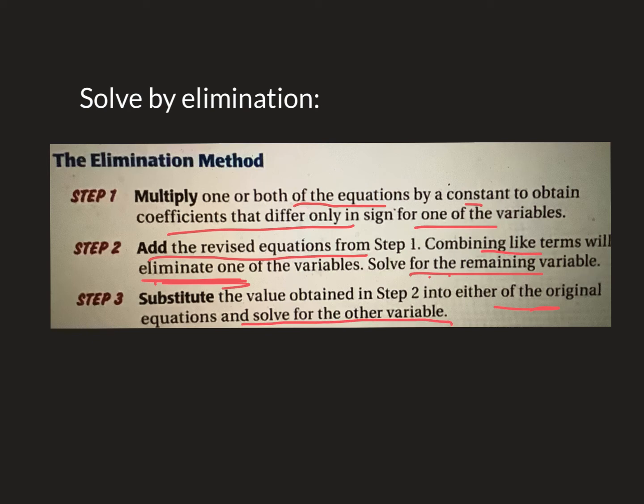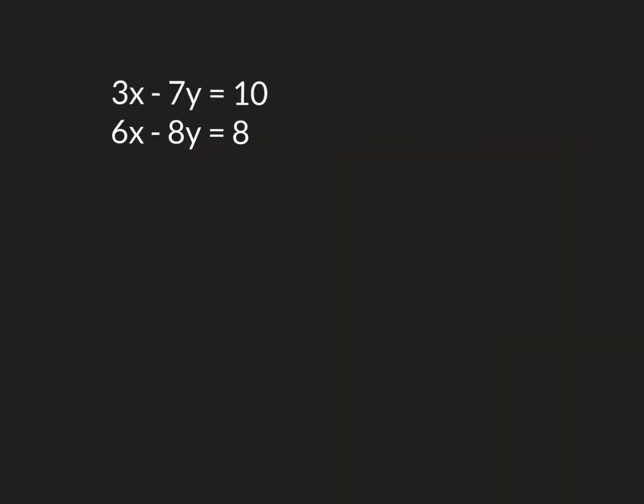Let me show you one of those. Alright, 3x minus 7y equals 10, 6x minus 8y equals 8. Now I need one of my variables to just be eliminated, disappear. So I'm going to do my x's. They look really good because 3 does go into 6. You could also get rid of the y's by multiplying both equations by something. But what I'm going to do is multiply the top equation by negative 2.